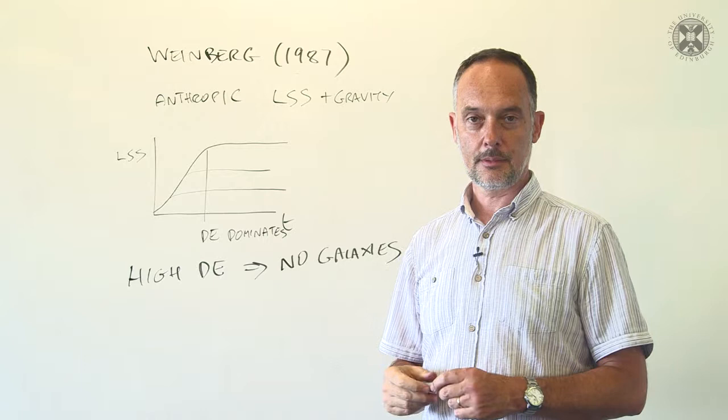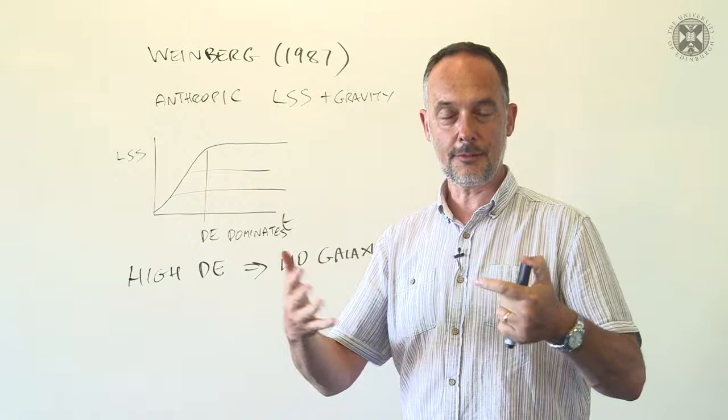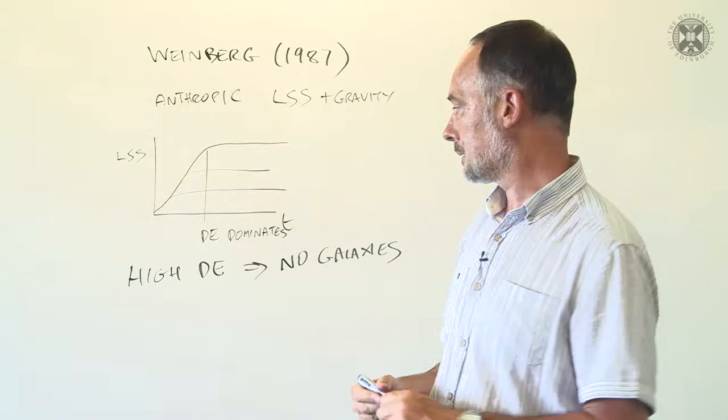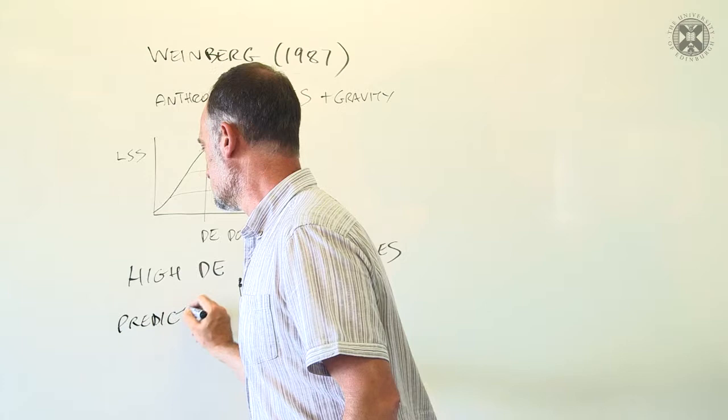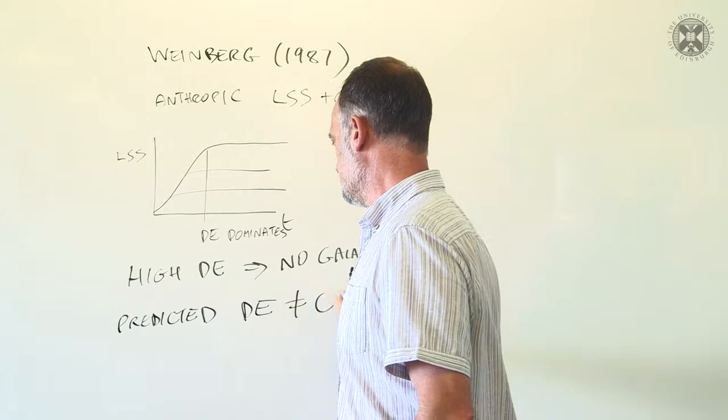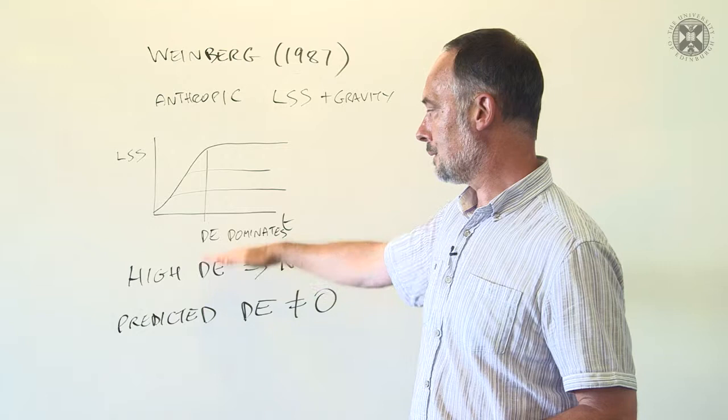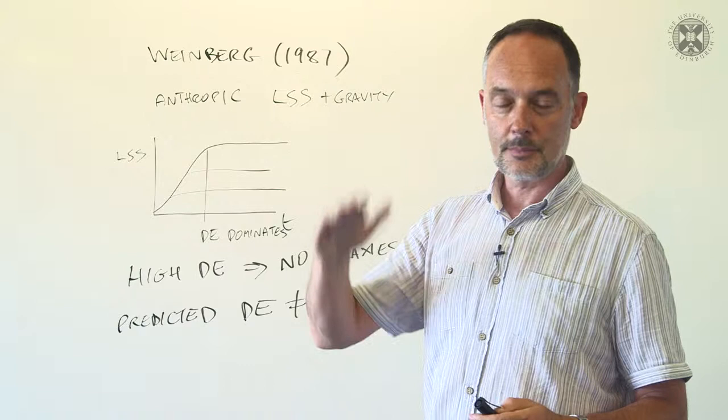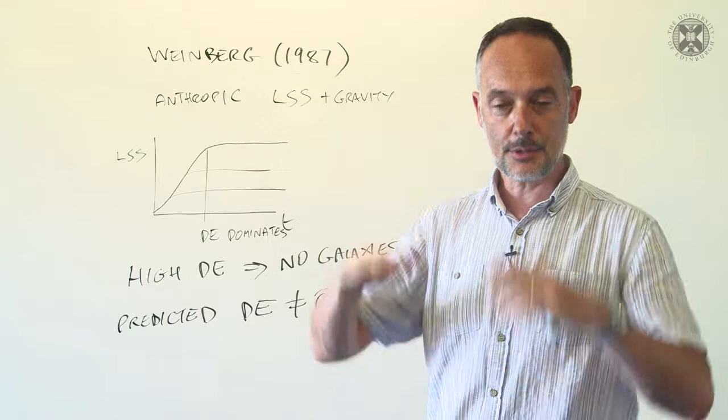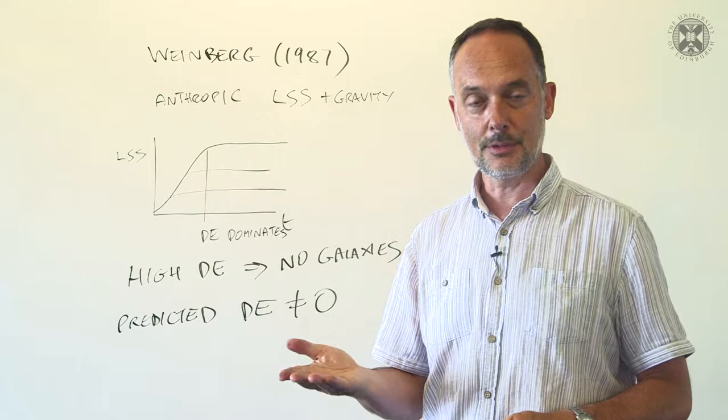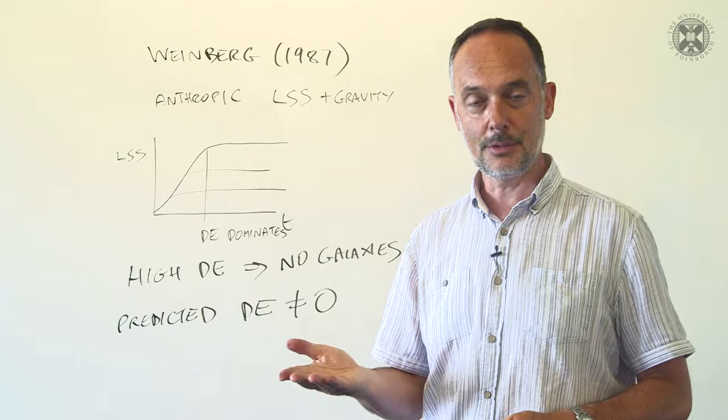So, Weinberg realized that the large value of dark energy would suppress the formation of structure. This, first of all, allowed him to understand why we weren't living in a universe where the vacuum density was large, because there would be nothing there to observe it. Moreover, he predicted, at this time, that the dark energy density would be seen to be non-zero. Because although there's an argument that means it can't be too large, once you get beyond a certain point, structure can form, and then the dark energy density doesn't matter. So, there's nothing that drives the value to be exactly zero. It just has to be below a threshold. And he expected, therefore, since large values were natural, it would be about as large as it could be, consistent with that threshold. And this is more or less what we saw in the 1990s.